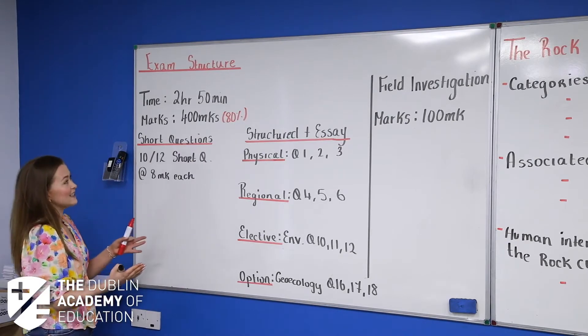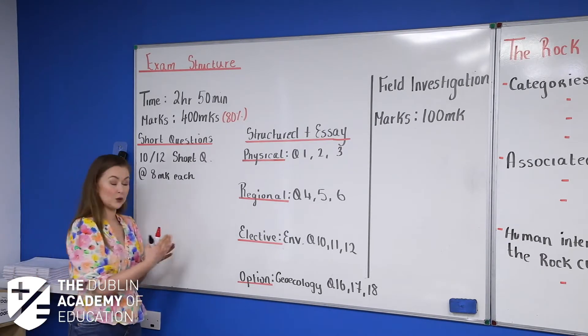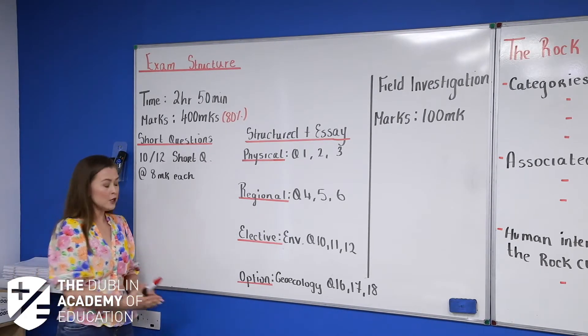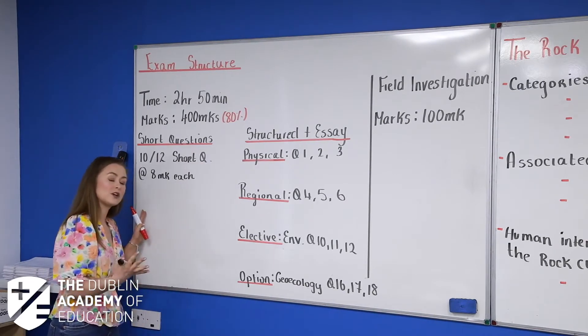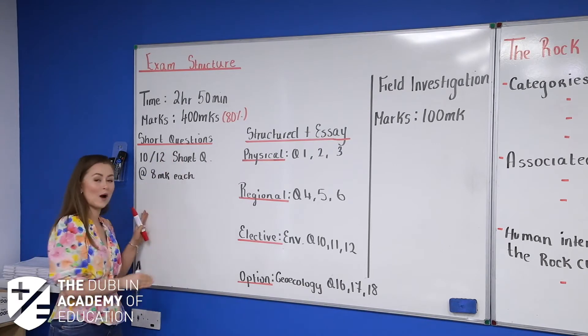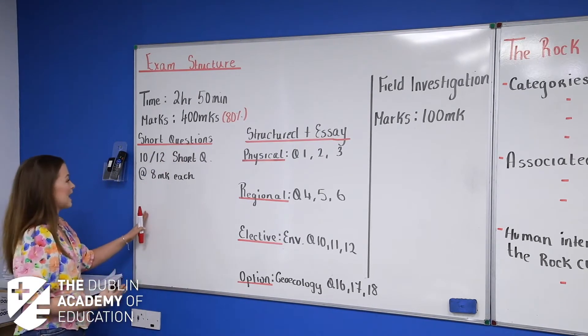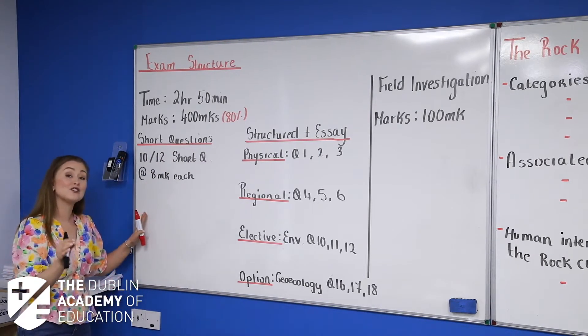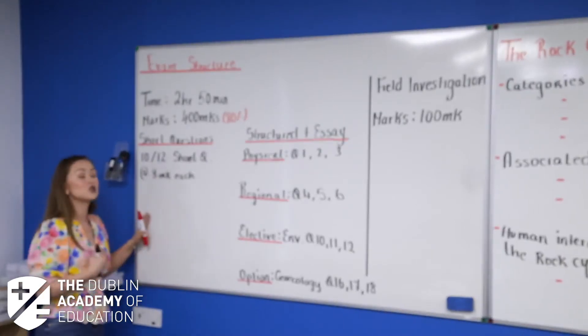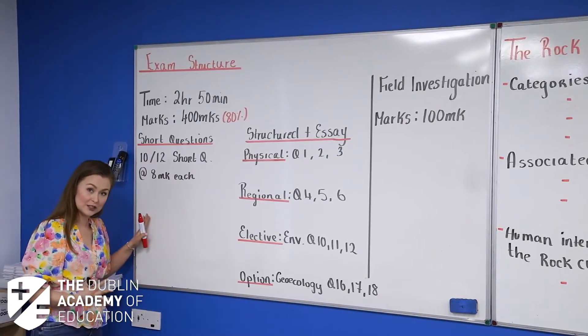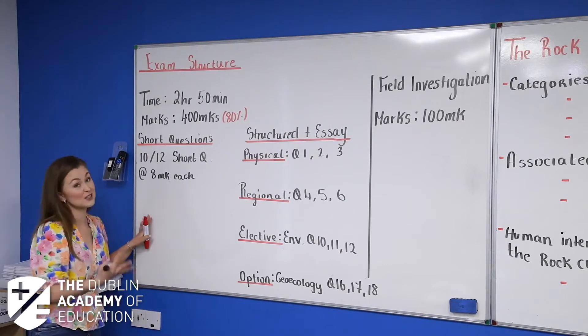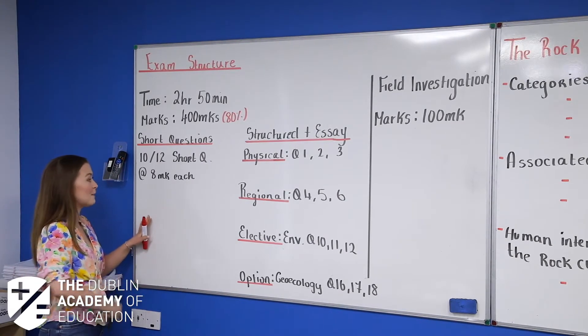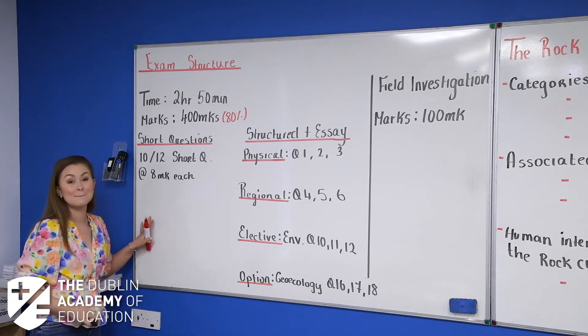So in that exam, what you have is you have two main sections. You have section one, which I have here. So if you open your exam paper there, your section one is your short questions. In your exam, the short questions, you have to answer 10 out of 12 short questions. You'll see each of them is generally on a page on its own, the first around 12 pages on your exam, and they're worth eight marks each.